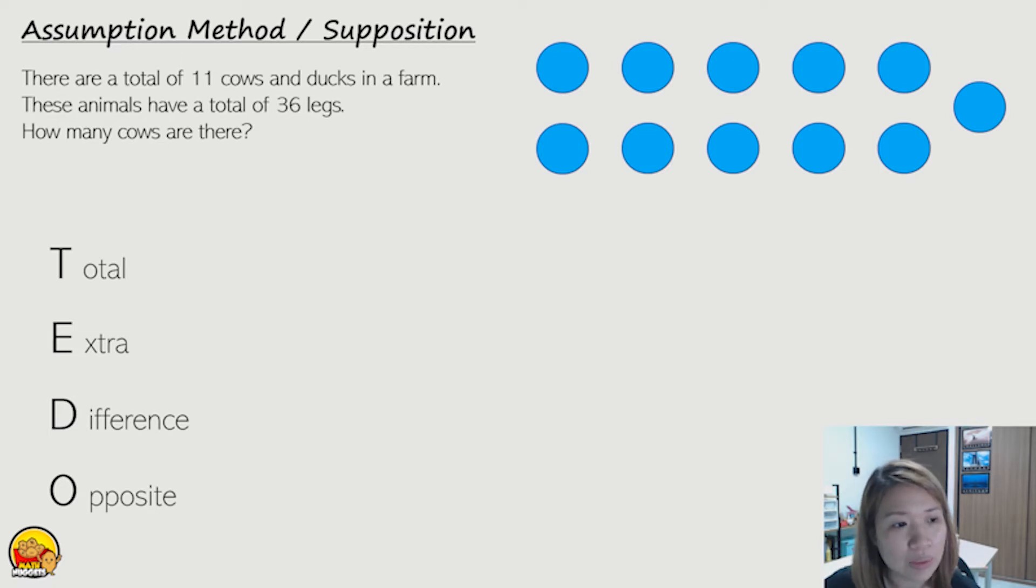Now the question wants us to find a number of cows. If the question wants us to find cows, we'll assume all to be the other thing. And in this case, the other thing refers to ducks. So we're going to assume all of them are ducks.